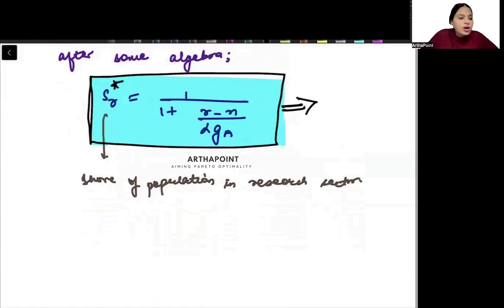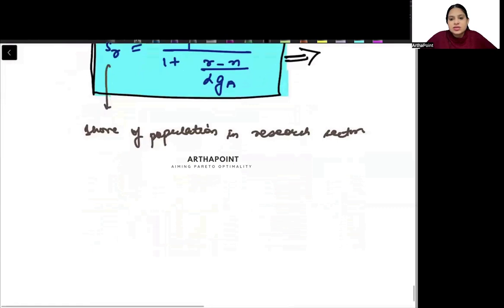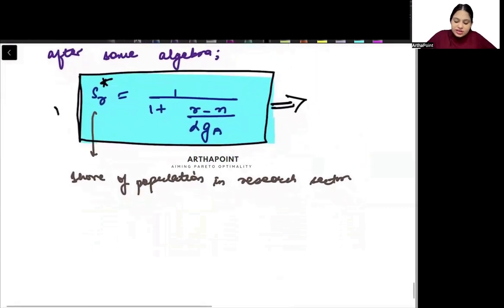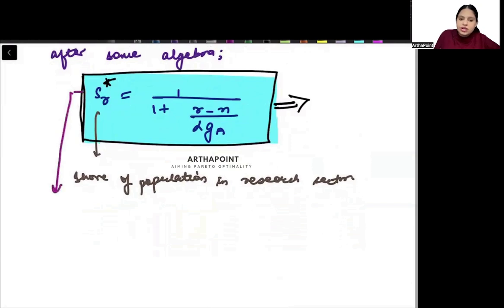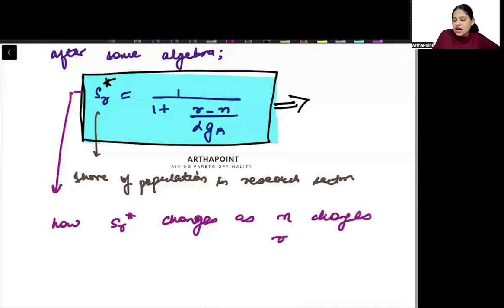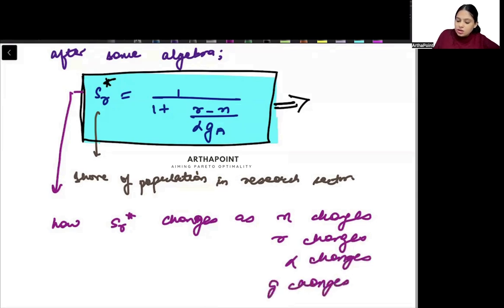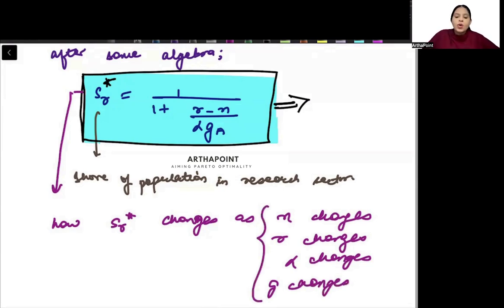The model was aiming to find the share of labor in the research sector, and we have derived the formula for it — this is sr-star. You can also look at different relationships: how sr-star changes as n changes, as r changes, as alpha changes, as g changes. So you can make a note of how sr-star responds to changes in each of these parameters.